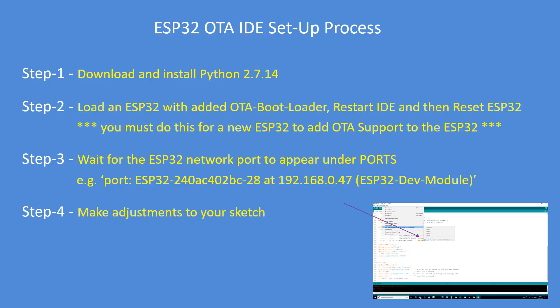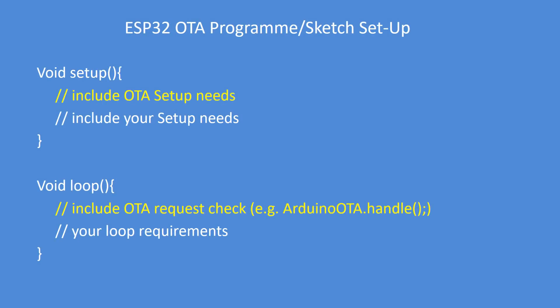Make adjustments to your sketch, then unplug and power up your ESP32 on a battery or a separate power supply — it doesn't need to be connected to your PC. You can now use that network port to update the device. To add over-the-air update support, include the OTA setup in your setup section and include the OTA request check in your main loop. If your program doesn't regularly call ArduinoOTA.handle, it will never undertake an over-the-air update — it needs to regularly poll for an update.